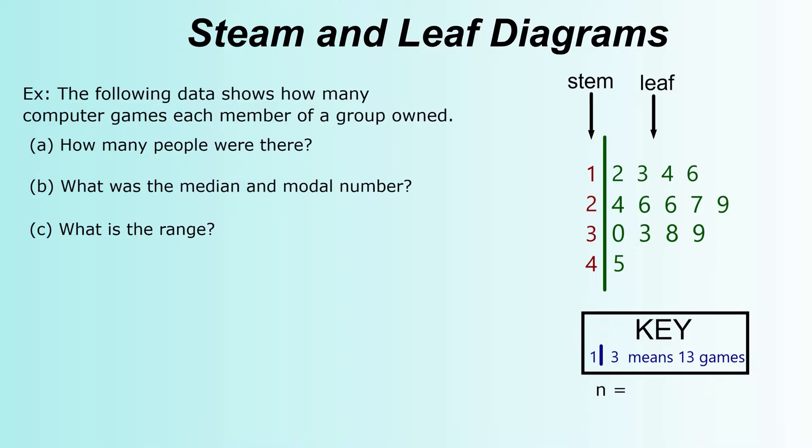So the numbers in the first row will be 12, then moving on to the next one, you pair the one up with the three to make 13, 14, and 16. And then second row, 24, 26, 26, 27, 29, 30, 33, 38, 39, and 45 is our highest number.